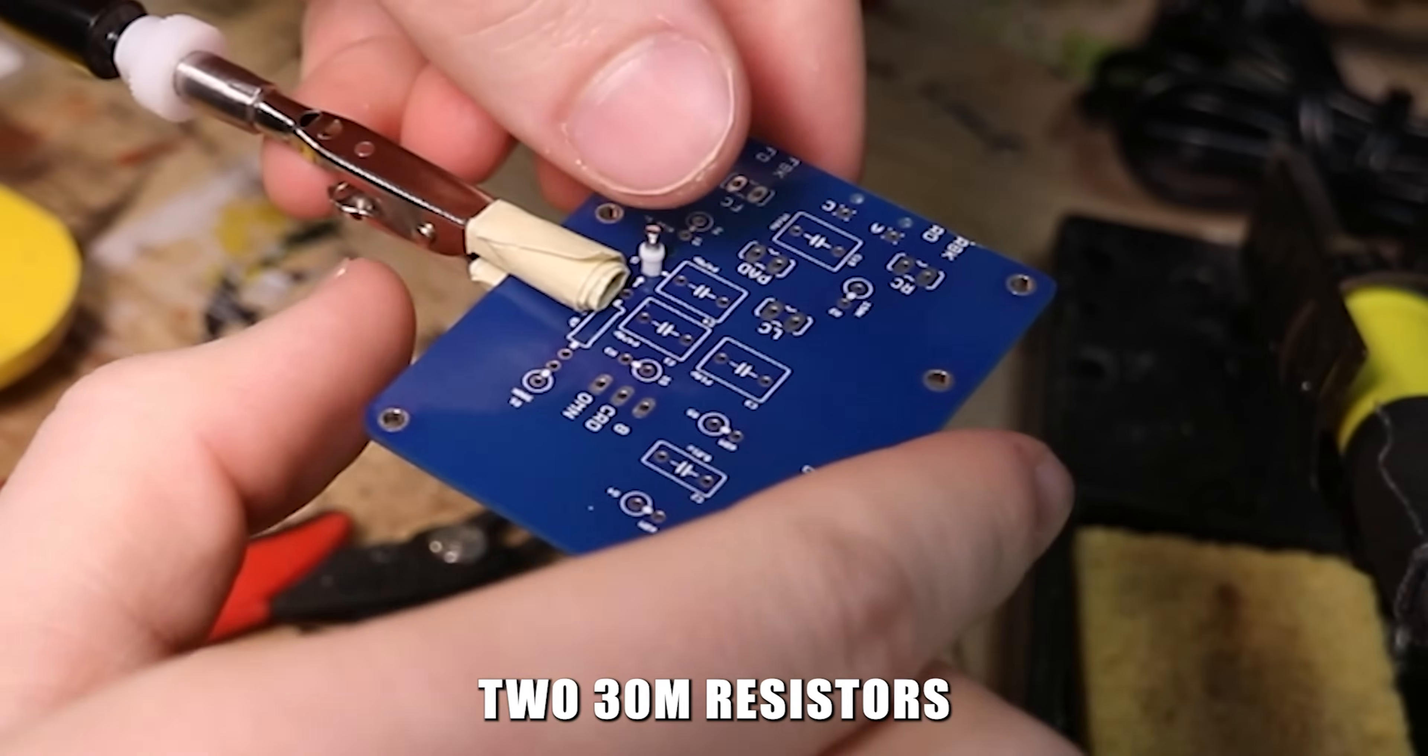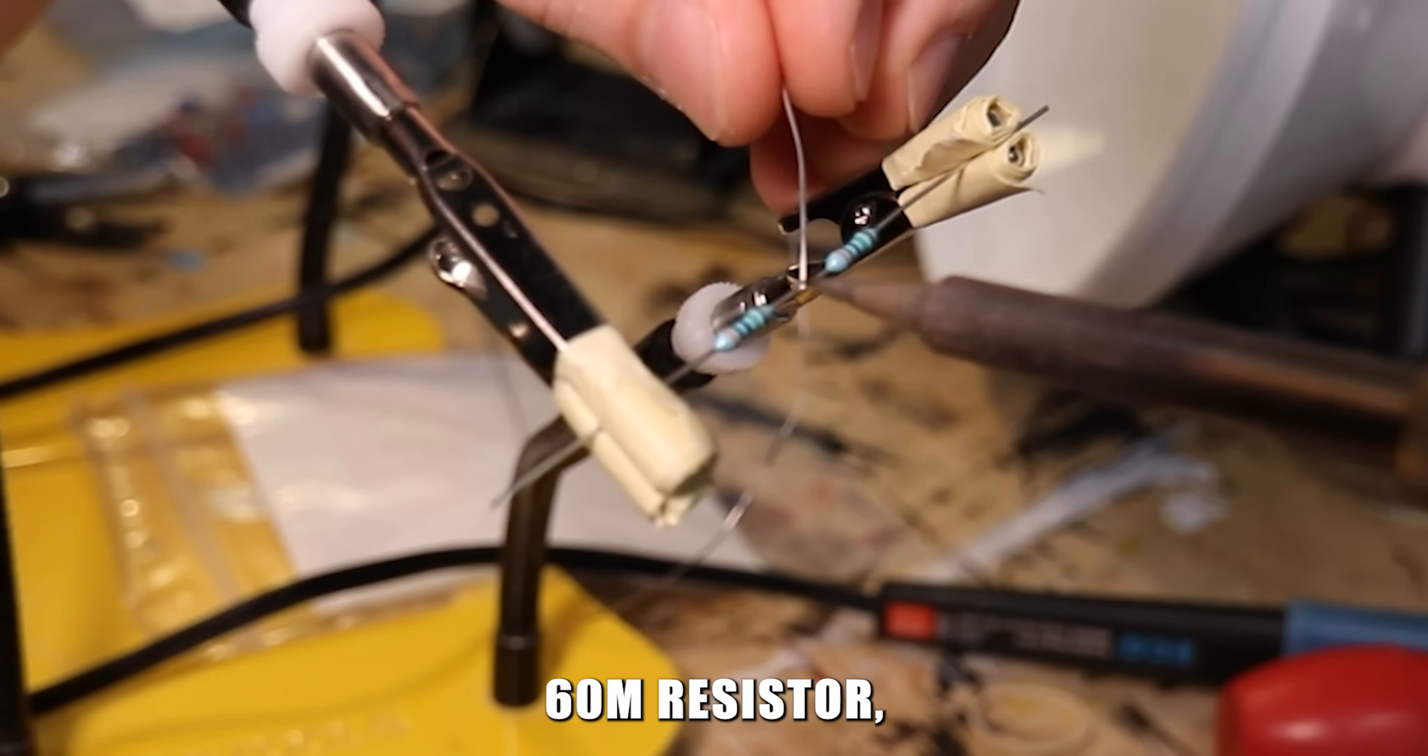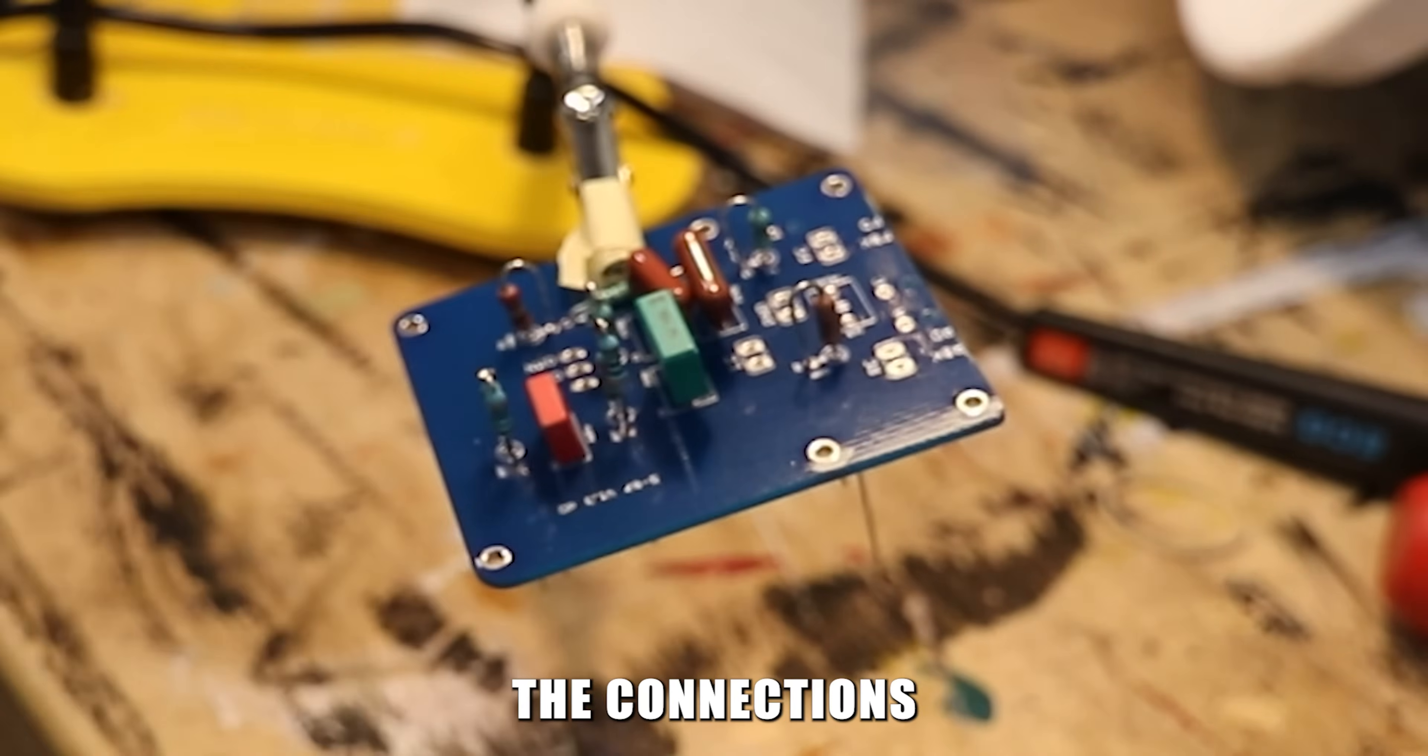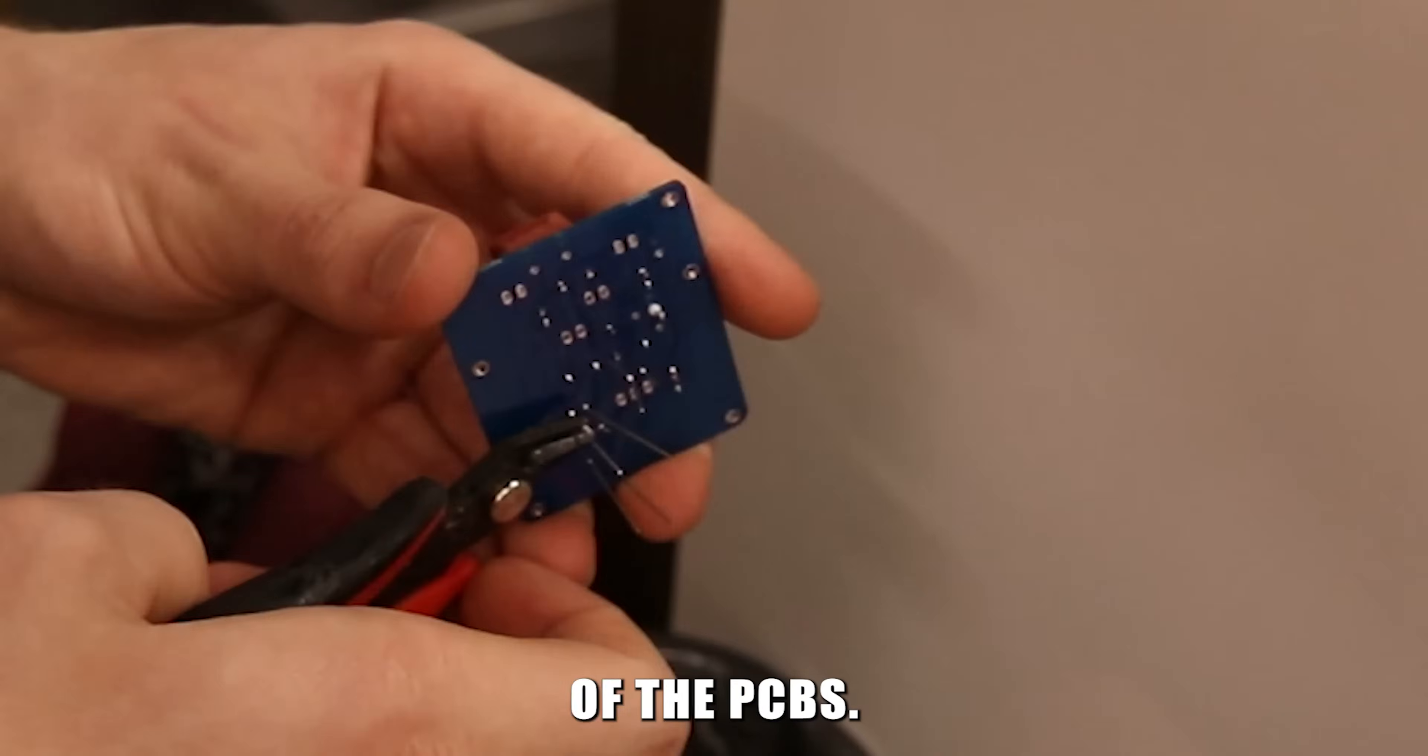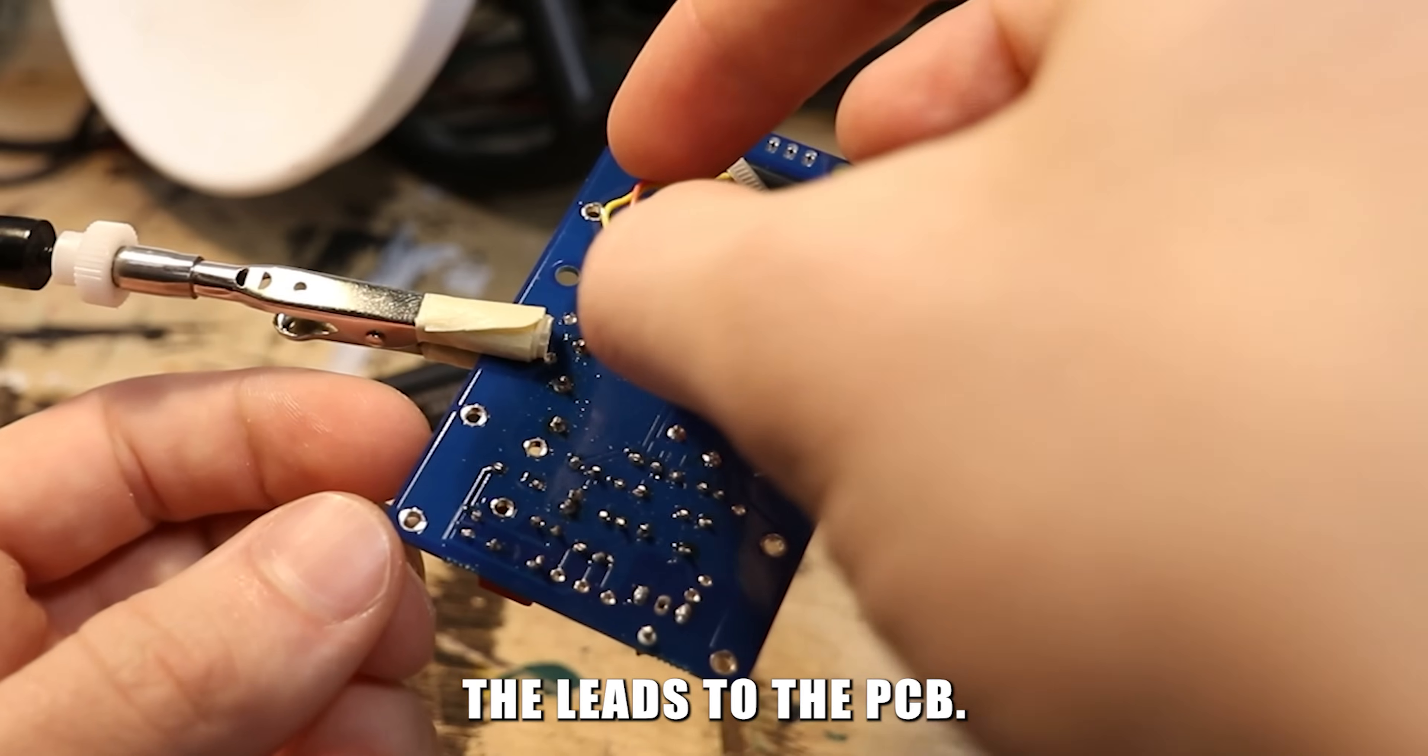I had to use two 30M resistors instead of the specified 60M resistor, so that's why I'm soldering these two together. Then I trimmed down the connections of the components on the back of the PCBs. I attached the transformer with a zip tie and soldered the leads to the PCB.